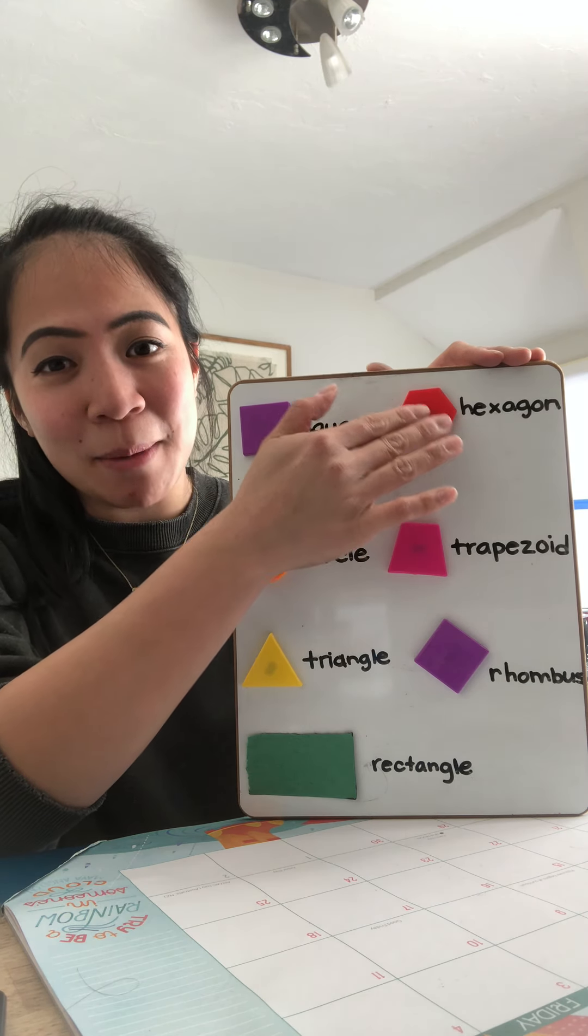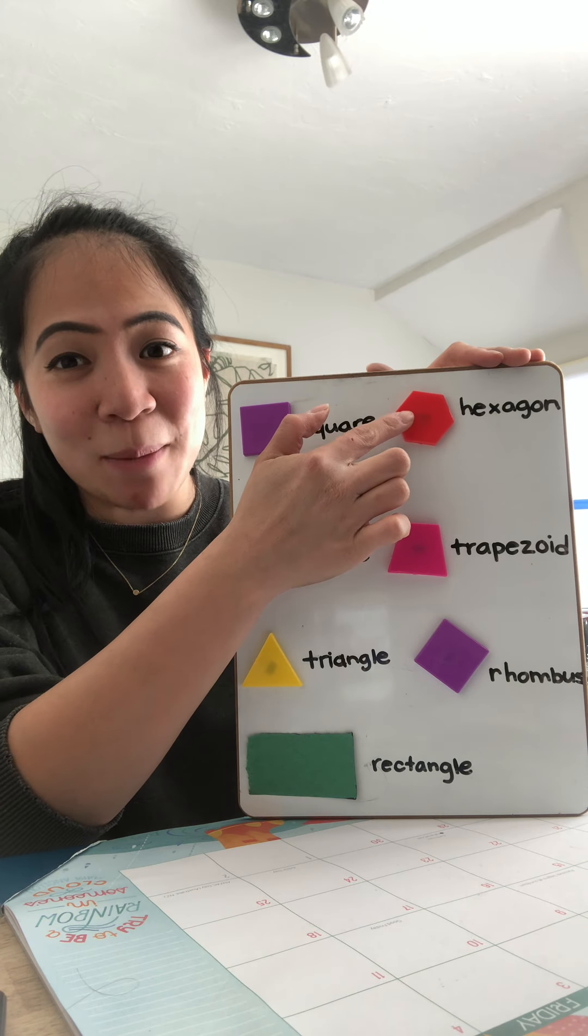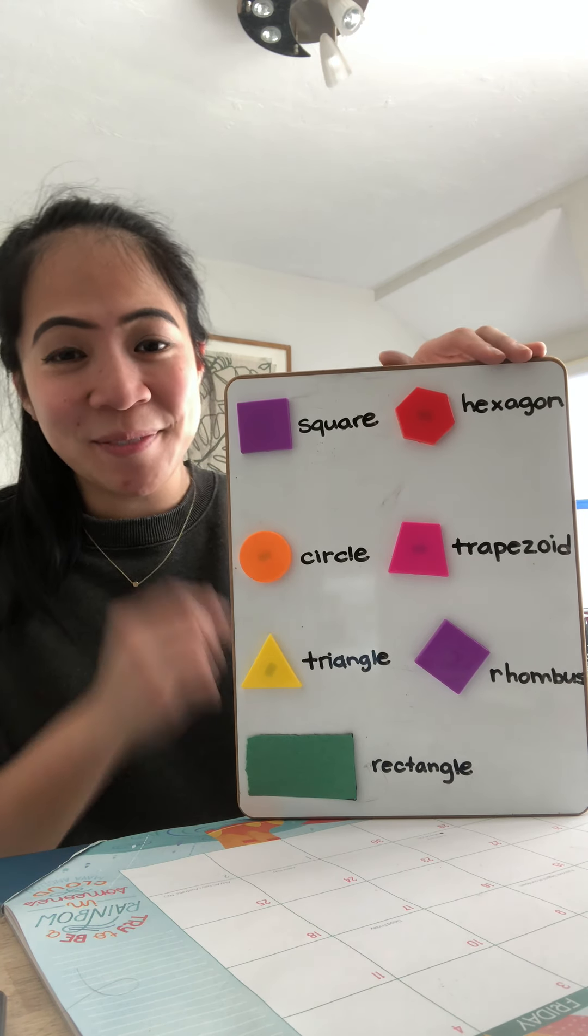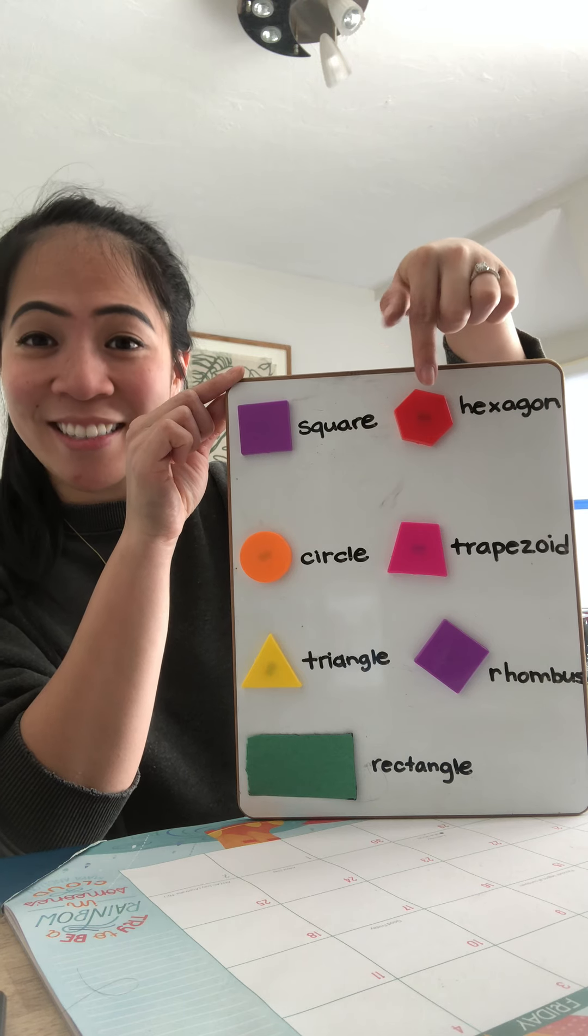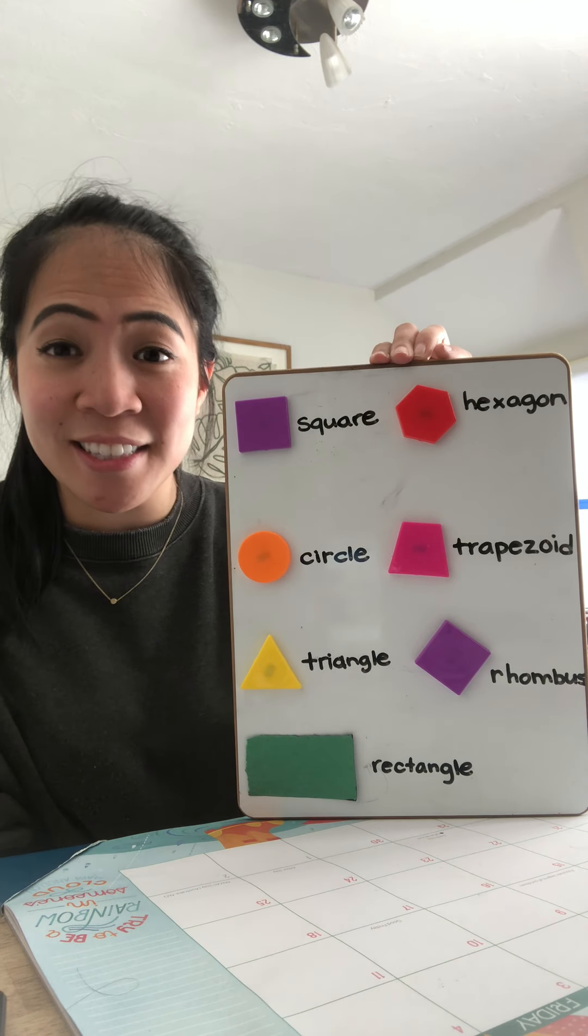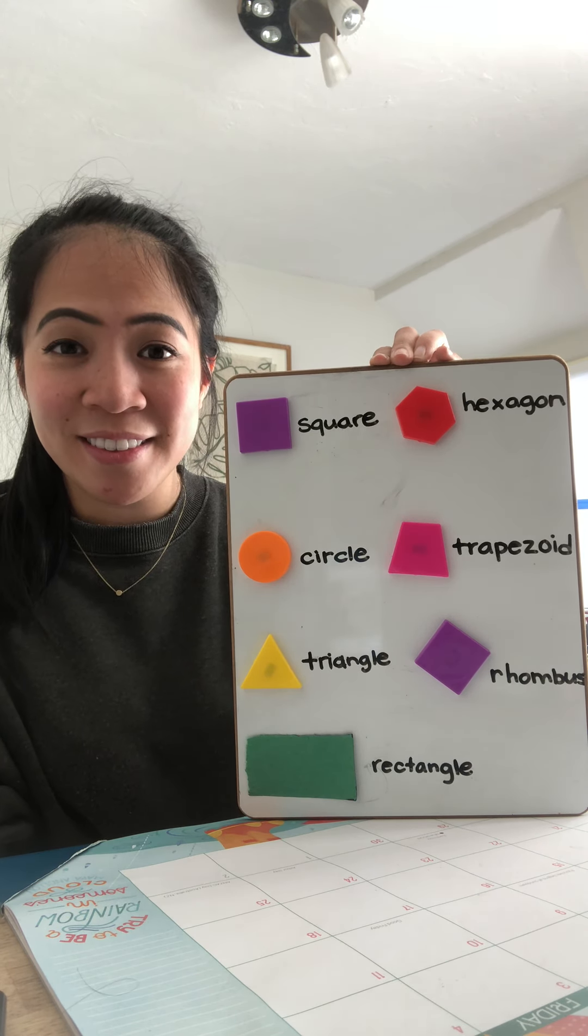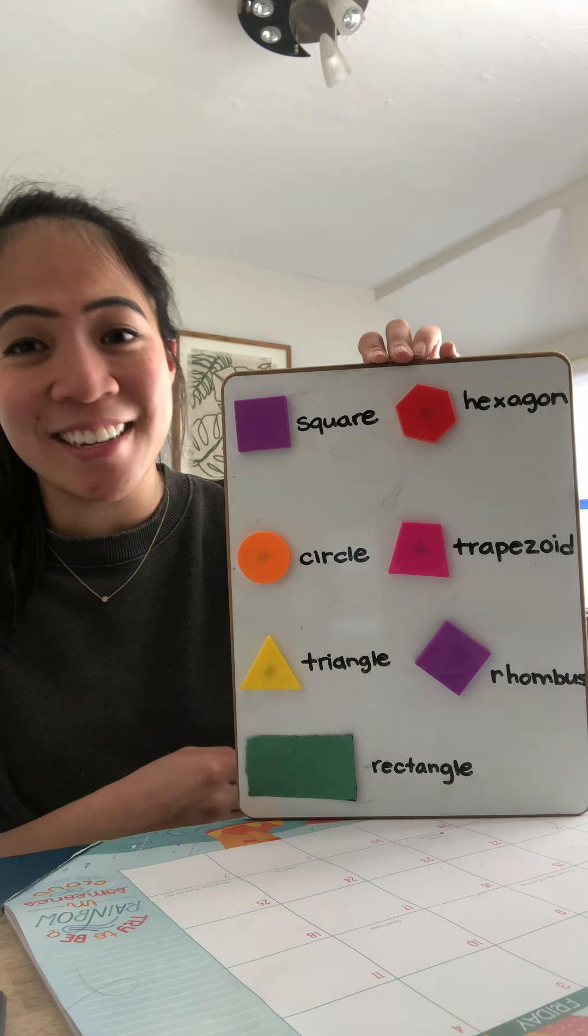Okay, now this might get a little tricky now. Does anybody know what shape this is called? Hexagon. Can you guys say hexagon? Very good. Hexagon.